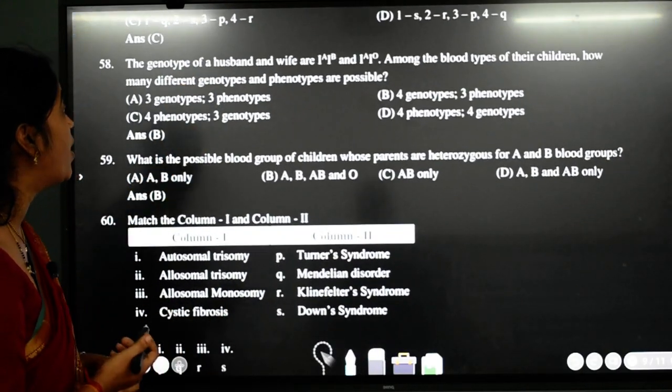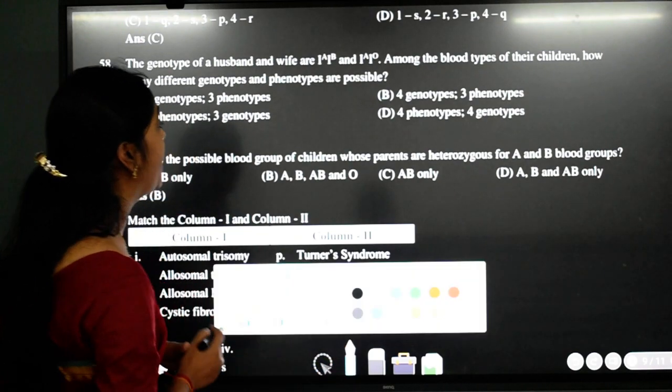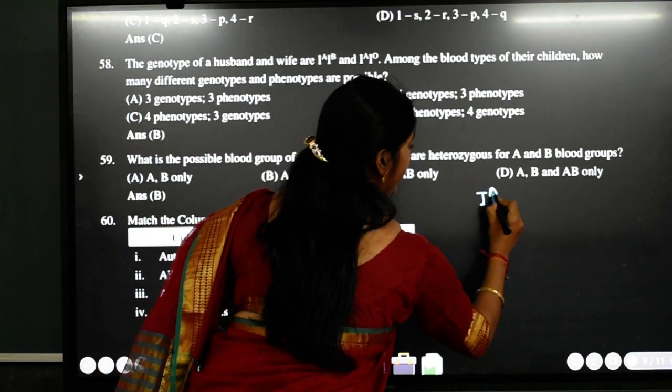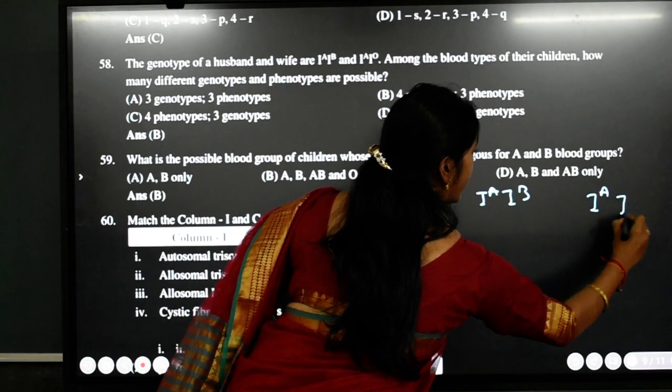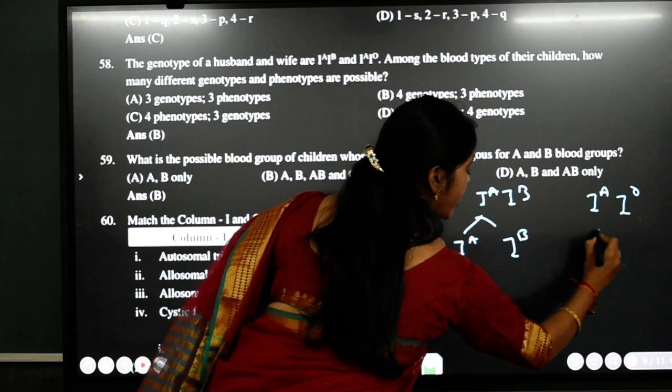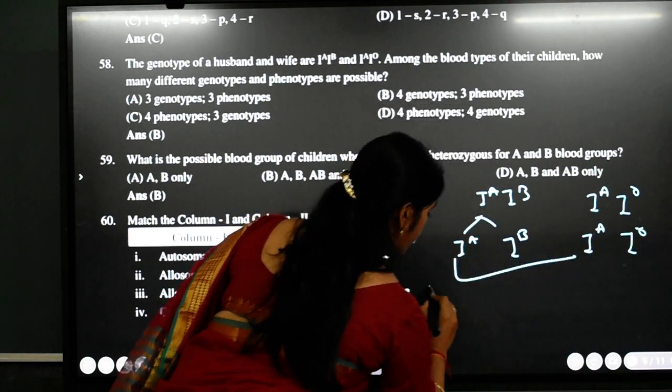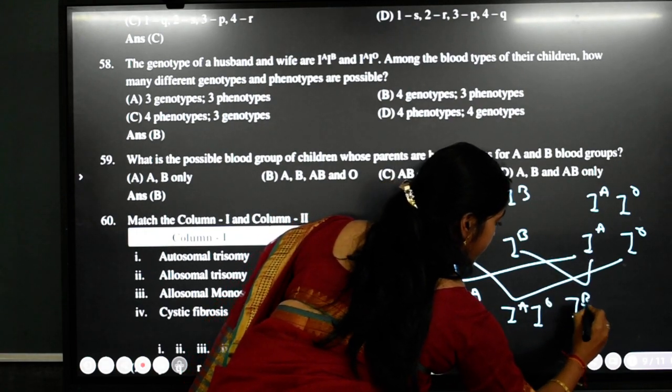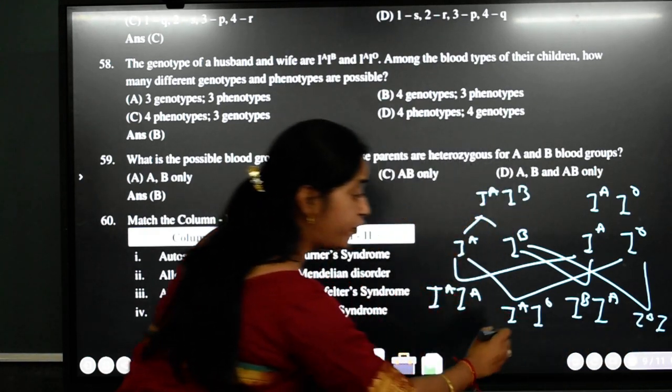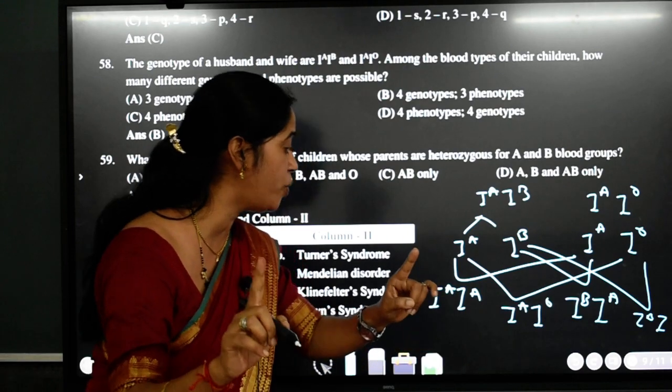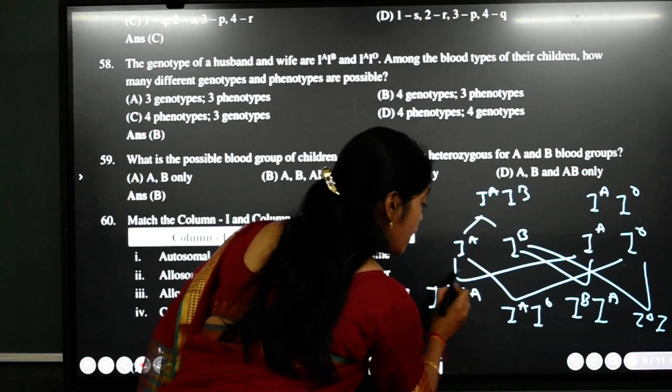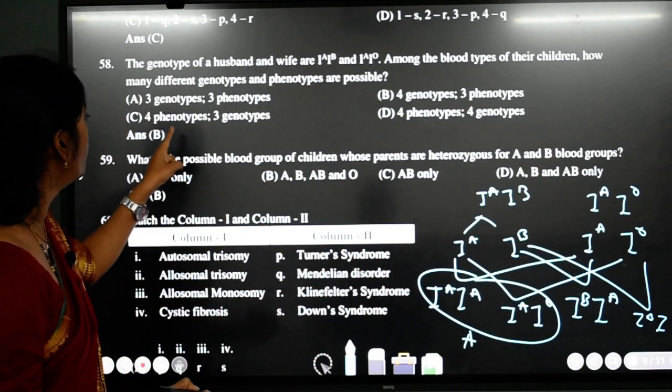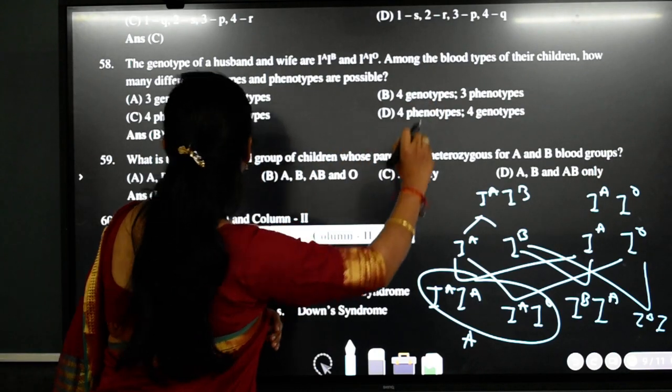58th question. The genotype of husband and wife are IA IB and IA I0. Among the blood types of their children how many different genotypes and phenotypes are possible? Very fast. You have got IA IB and then you have got IA I0. Segregate them. You get IA IB here and then you get IA and I0 here. Combine them. You will get IA IA, IA I0, IB IA and IB I0. See student, you are getting four types of genotypes here. So the genotypes are four. But keep it in your mind that IA IA and IA I0 both are going to give you same blood group that is A. So how many blood groups you can get? You can get only three blood groups here. So if you look at the option, you will get four genotypes but only three phenotypes. So the answer is B.